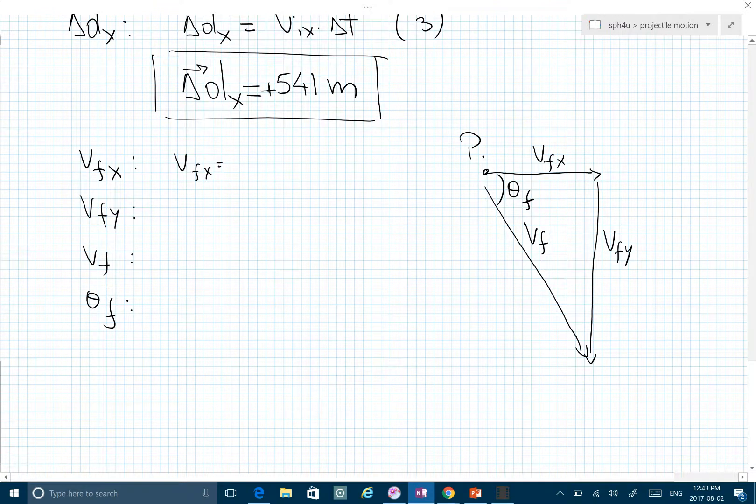VFX is simple - it's the same as VX because it never changes, so it's 52 meters per second. For VFY, we're going to use any of the equations we know. We have a lot of information now, but the easiest one to use is VFY equals VIY plus...